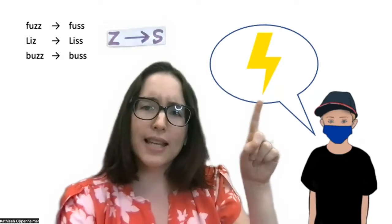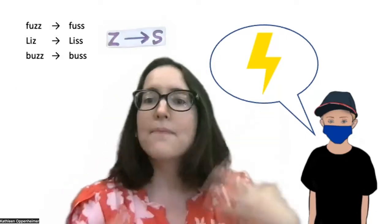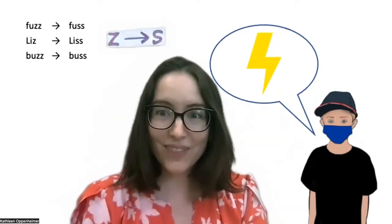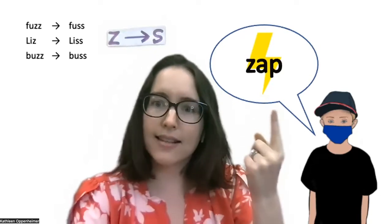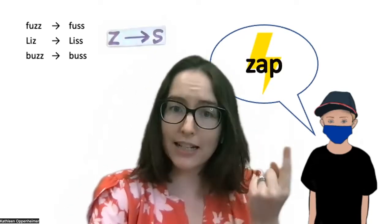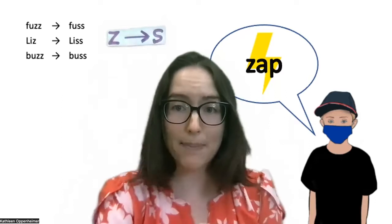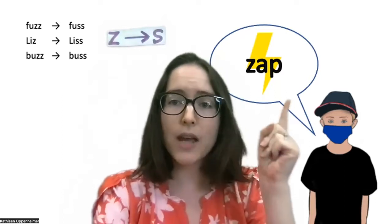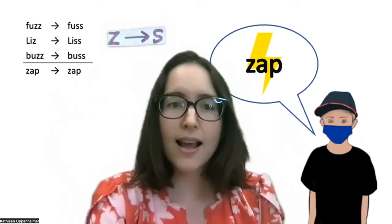So we say, "Zap — how do you think he'll say zap?" And students guess. He still says zap. Interesting. We might have predicted "sap" based on our hypothesis. So let's add this to our list.